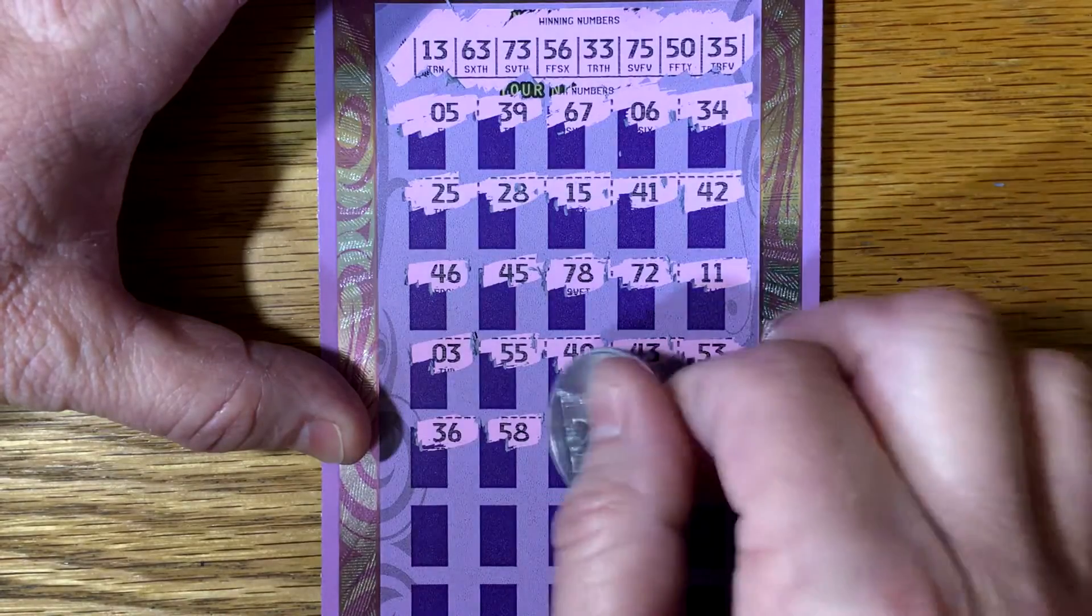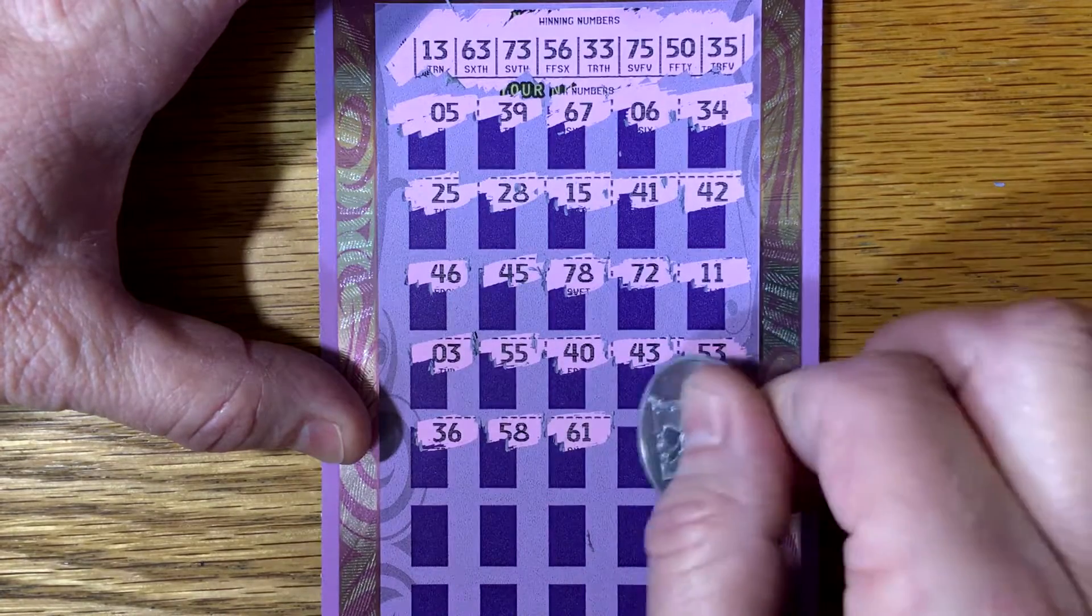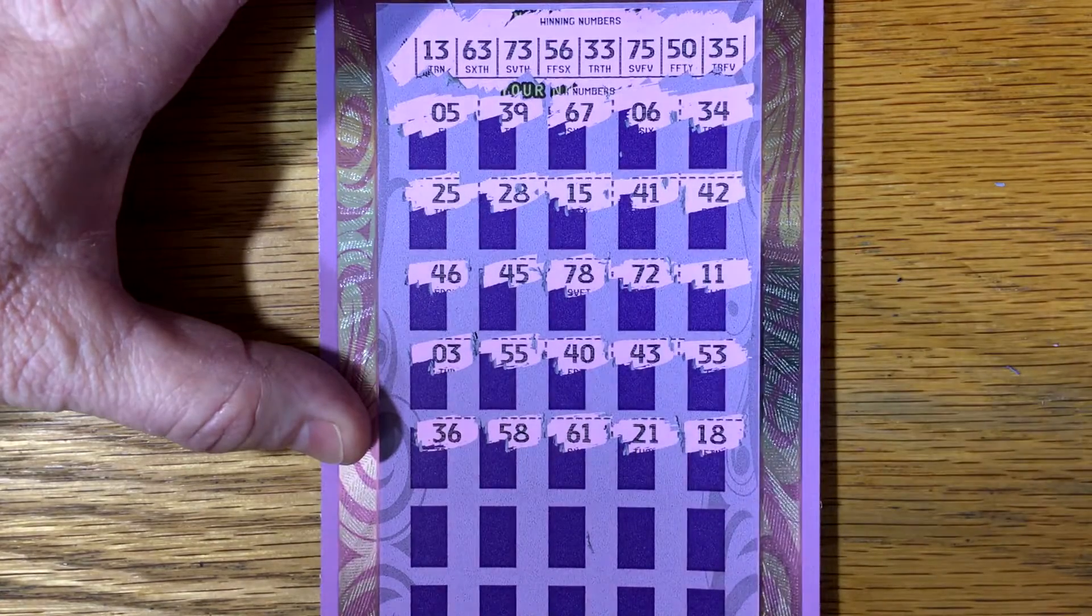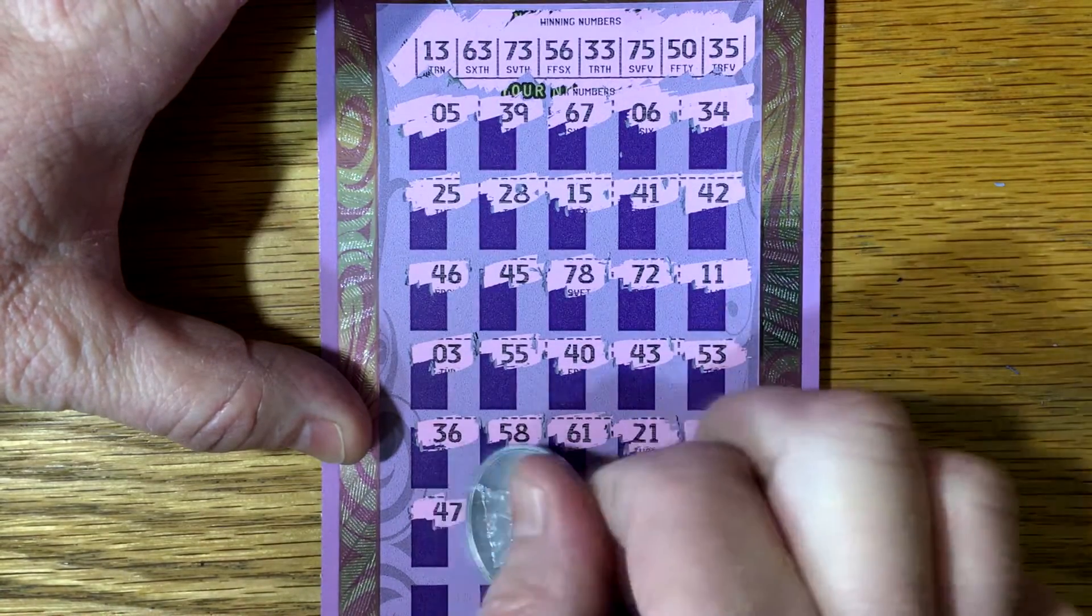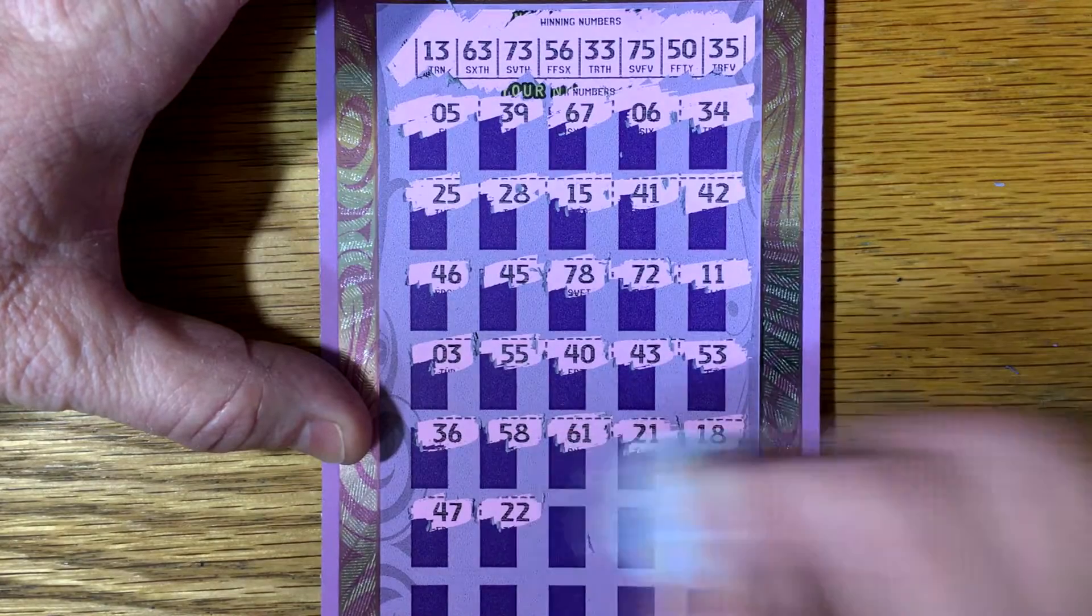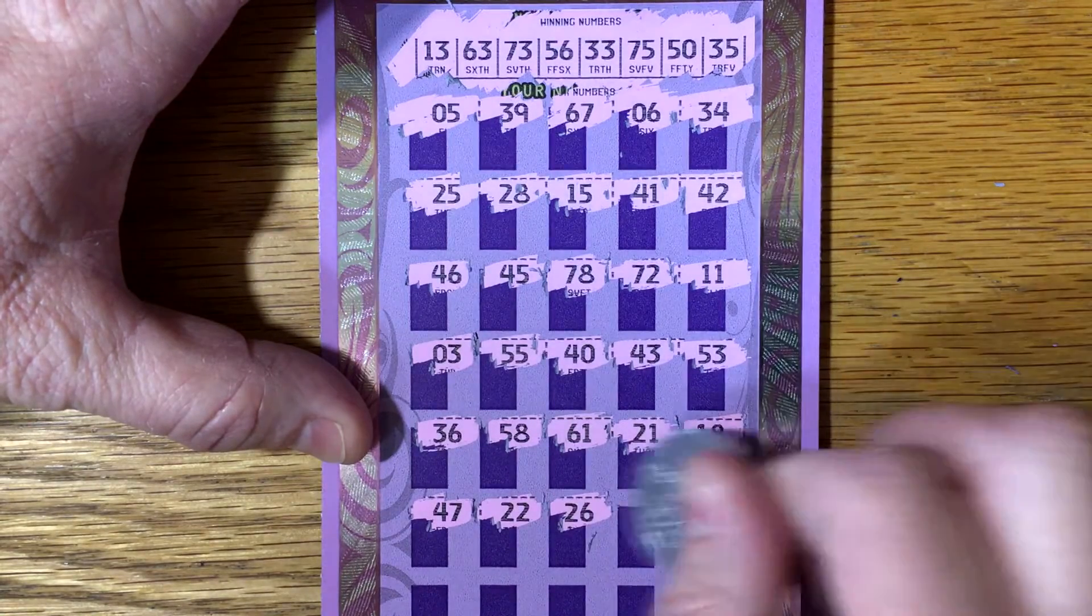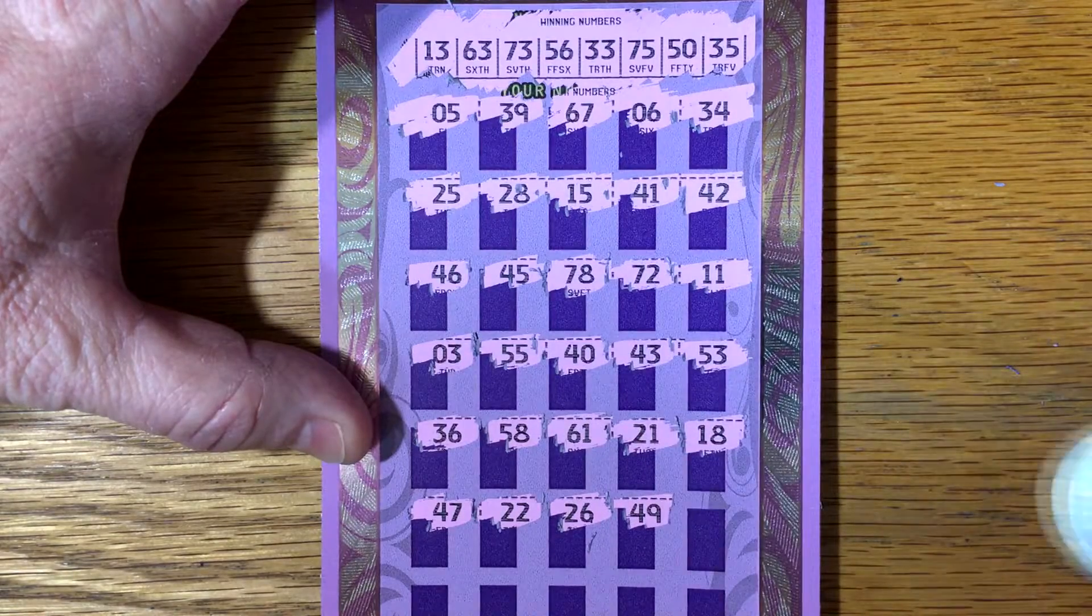36, 58, 61, 21, 18, 47, 22, 26. Devil dollar. Where that star symbol will be. Very cool.